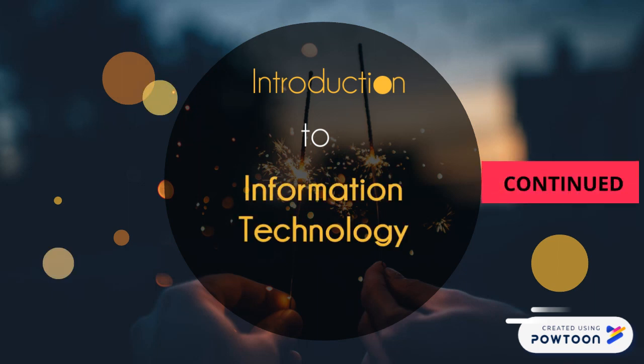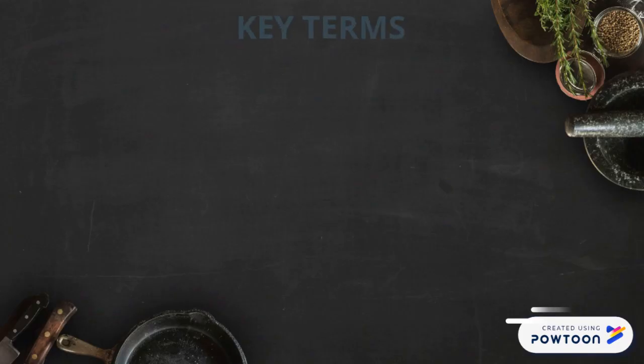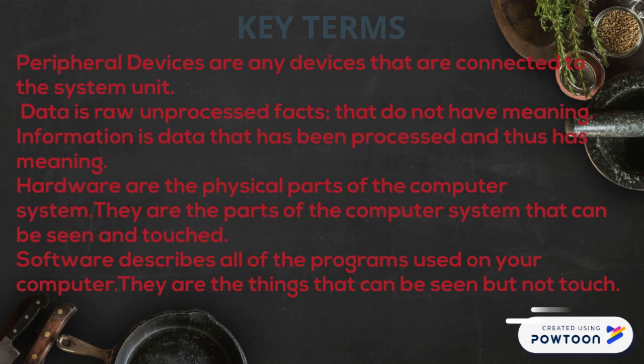The first key term is peripheral devices. Peripheral devices are any device that is connected to your system unit. When we think of a computer system, it generally has four components: the monitor, the keyboard, the mouse, and the system unit. The mouse, monitor, and keyboard are all connected to the system unit, making them peripheral devices. Other examples include microphones, scanners, printers, speakers, and earphones — anything connected to the system unit is a peripheral device.